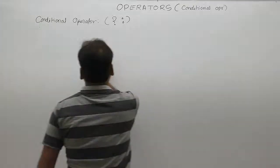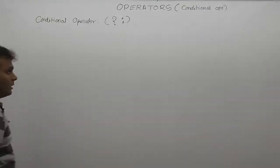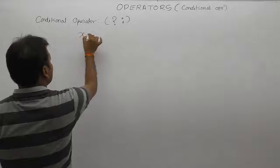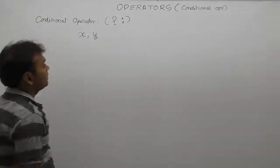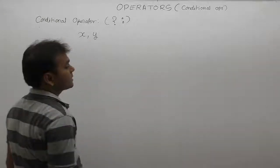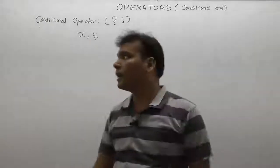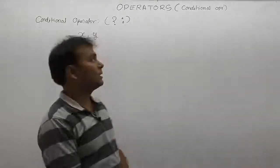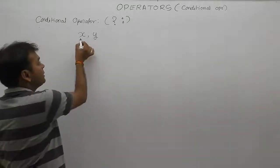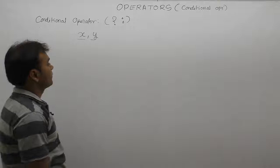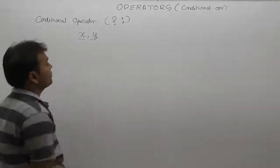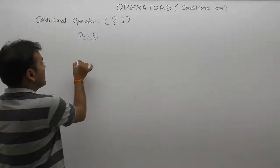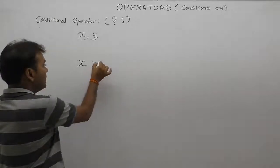Suppose we have two numbers x and y. The values of x and y will be read using scanf function. How to identify which one is largest out of these two numbers? To identify the largest number out of x and y, we apply a relational expression: x greater than y.